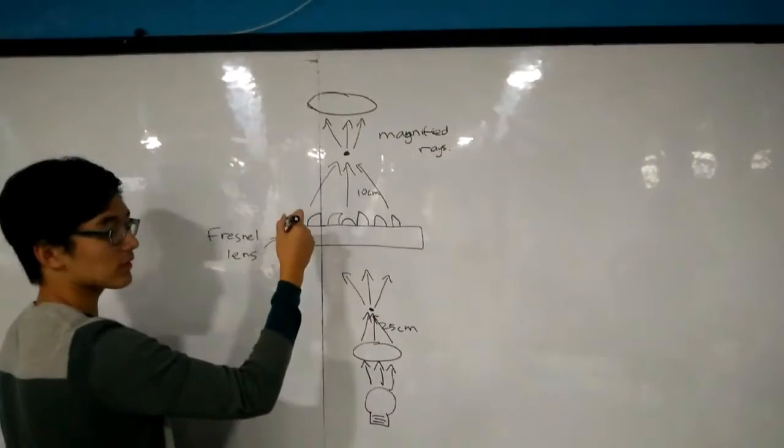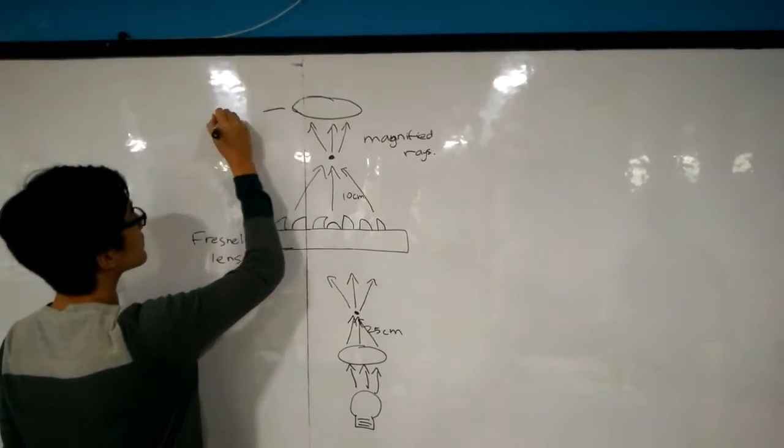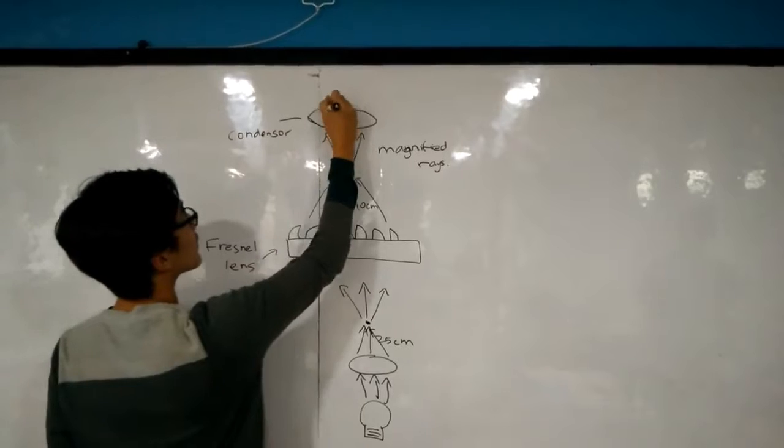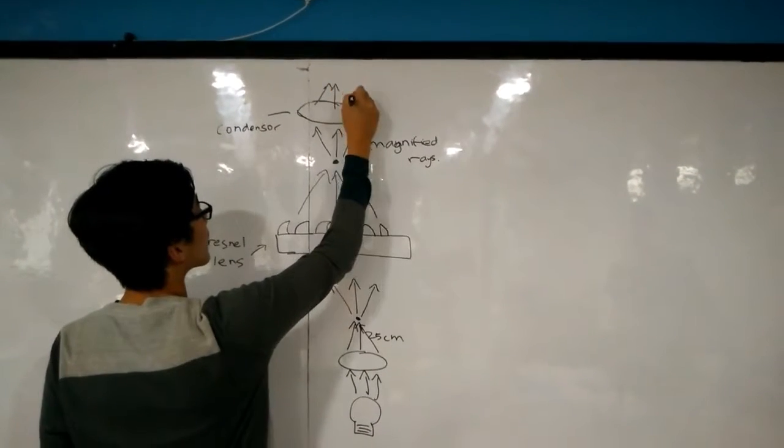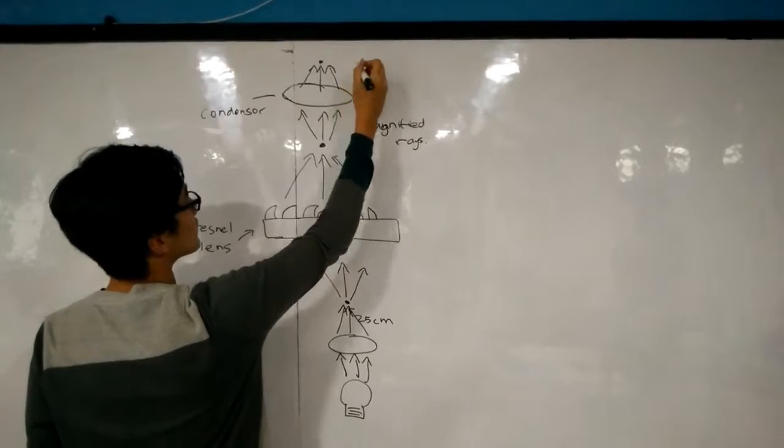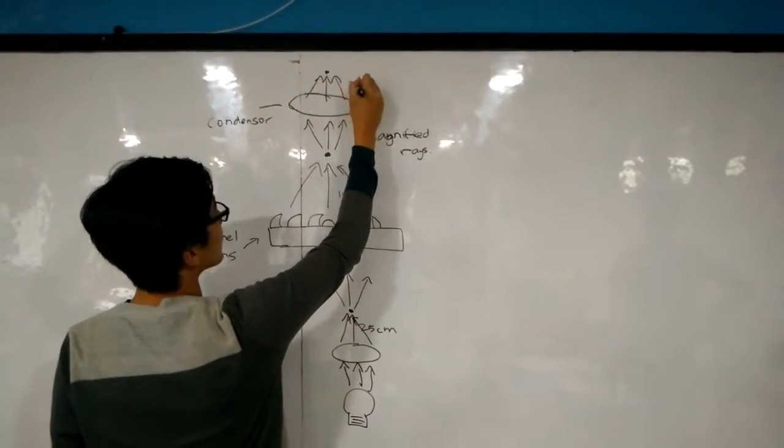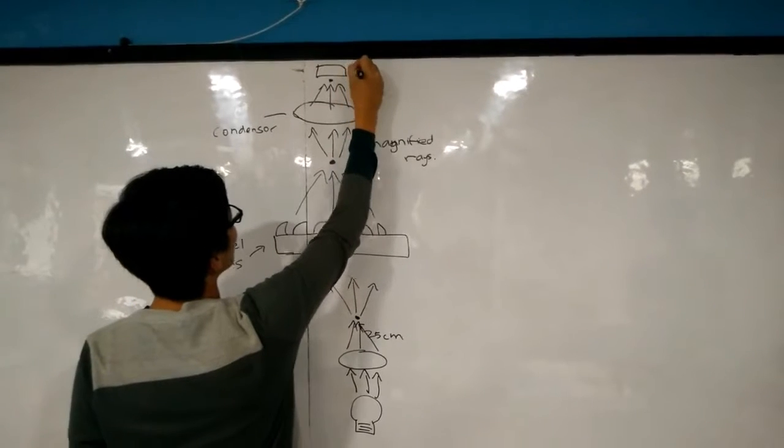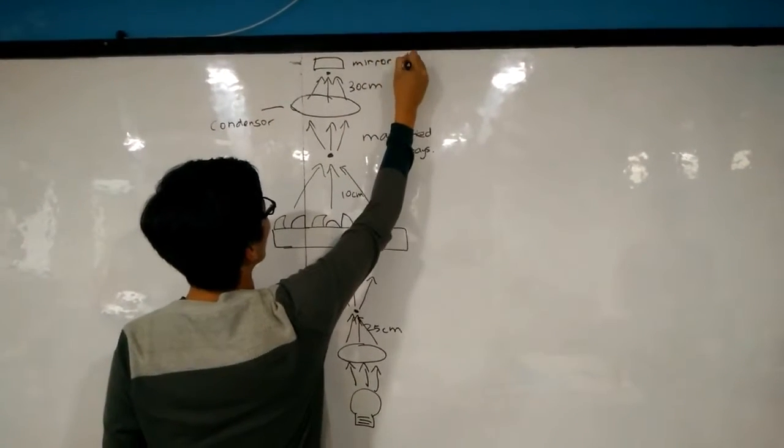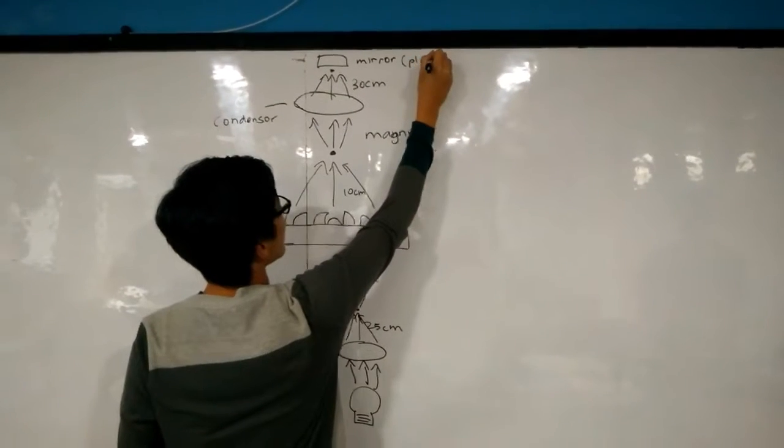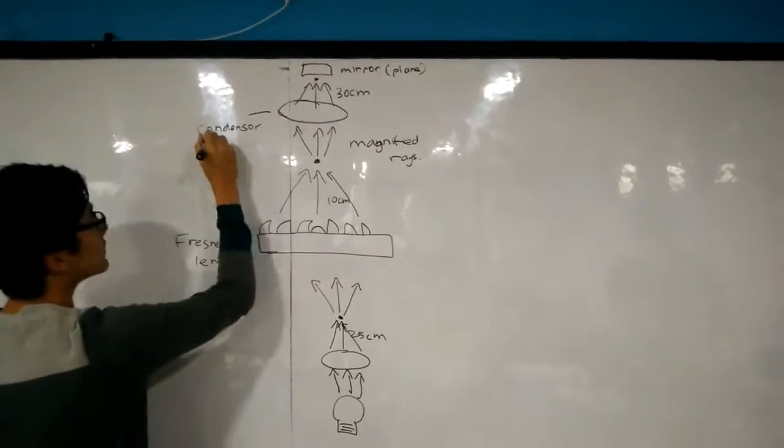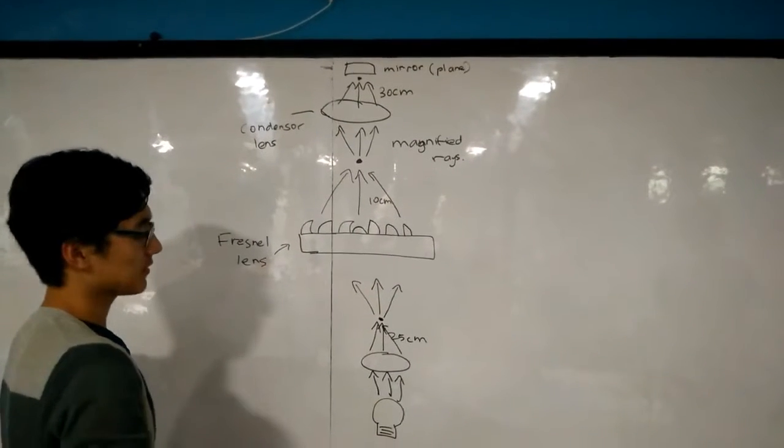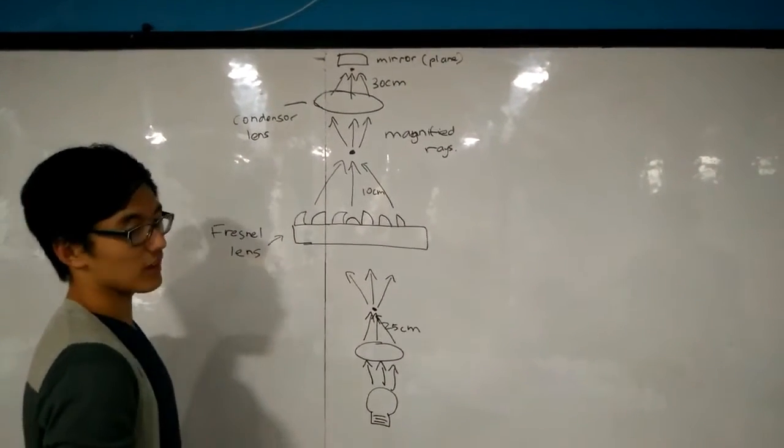When it hits the condenser lens, it's focused right to the focal point. And that's where the mirror is. And since the mirror is a plain mirror, it doesn't produce a virtual image or anything. There's no risk of that because it just reflects the rays just how they are, and it goes onto the light board, which we are drawing on right now.